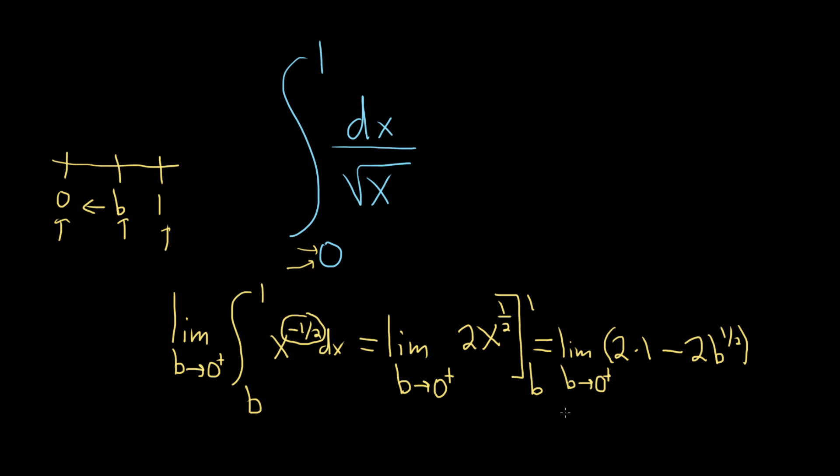Now you can just go ahead and plug in zero. So this will be two minus two times zero to the one-half, which is just zero. So you end up with two minus zero, which is equal to two.